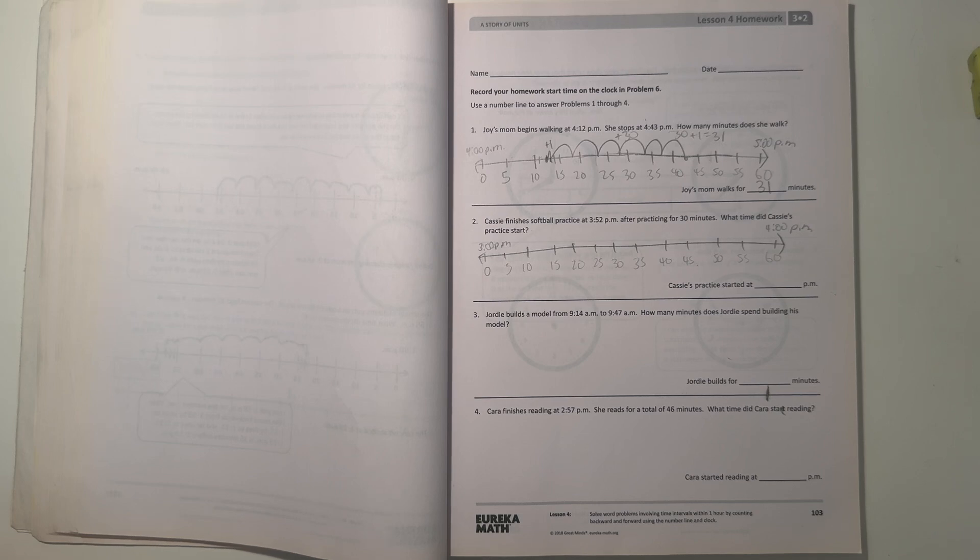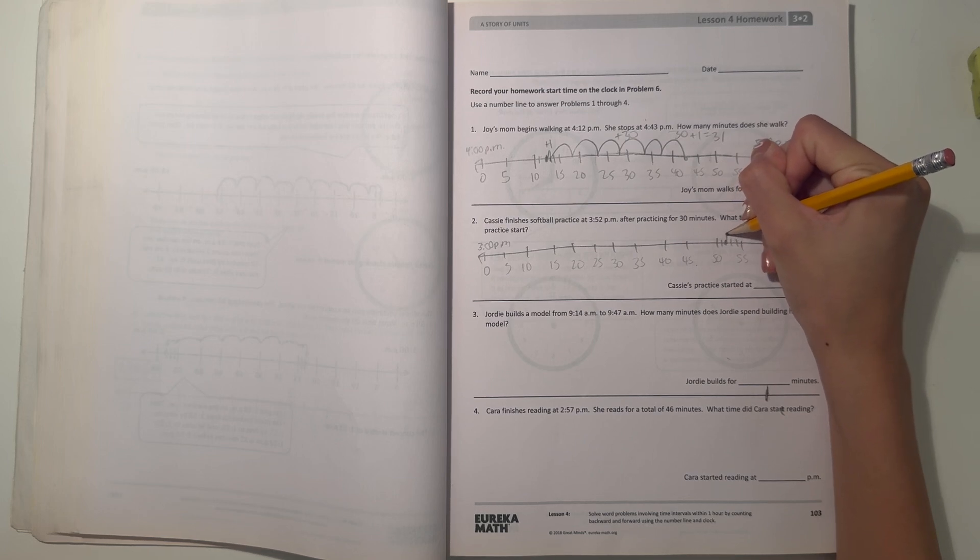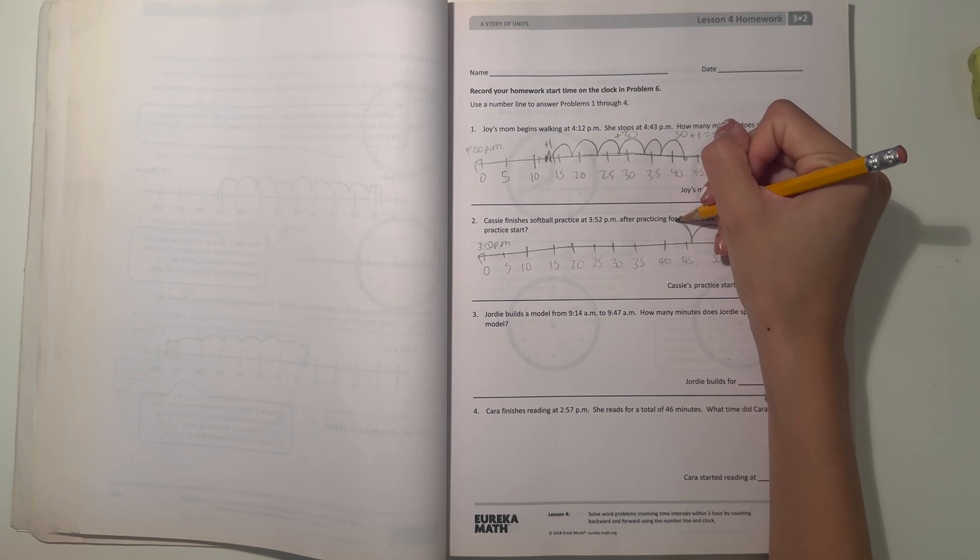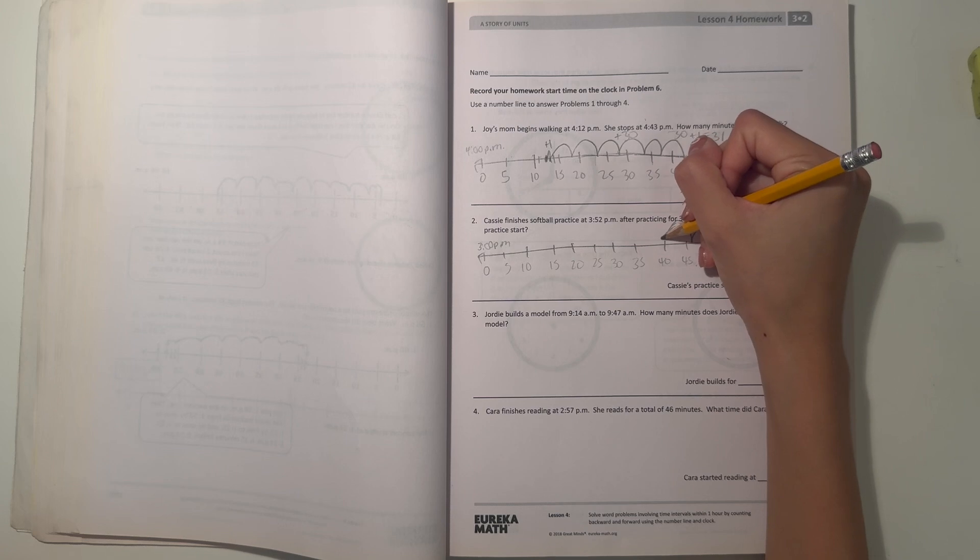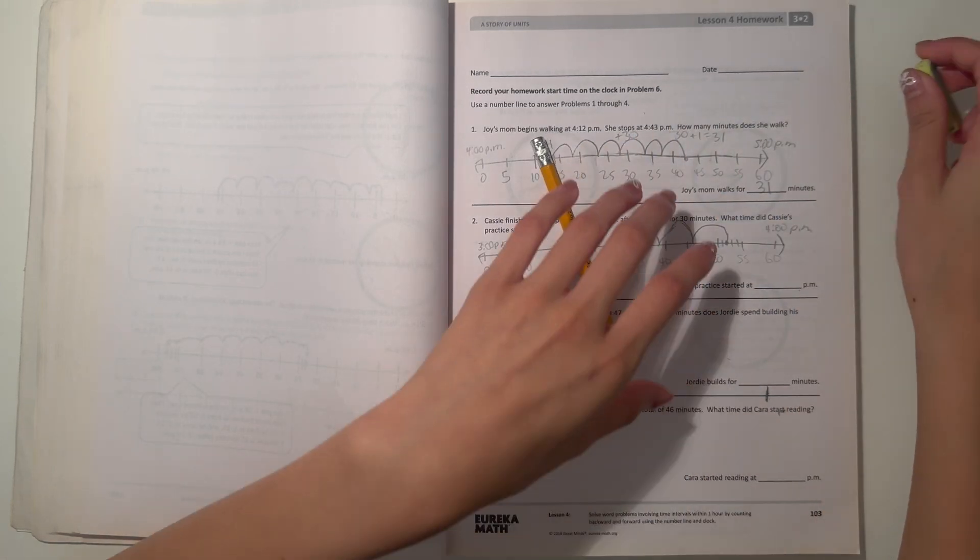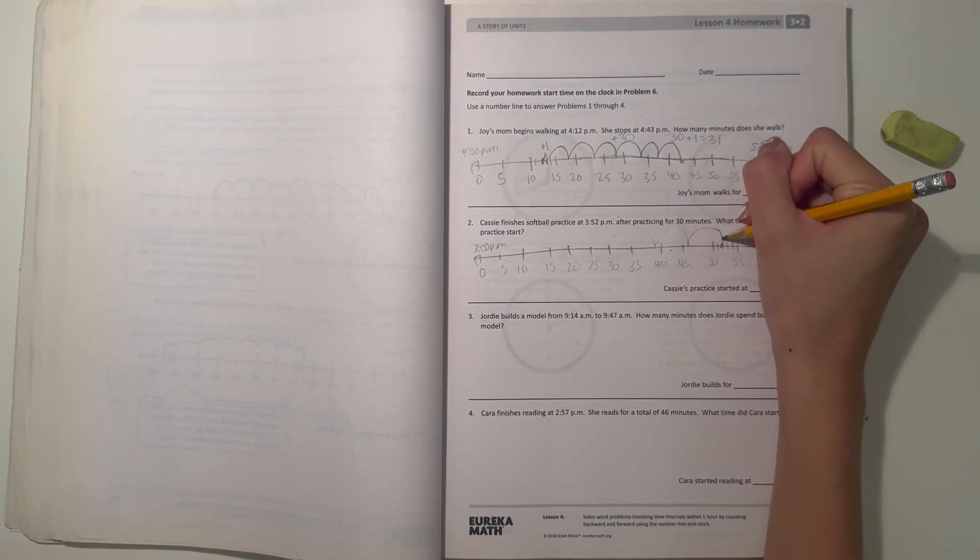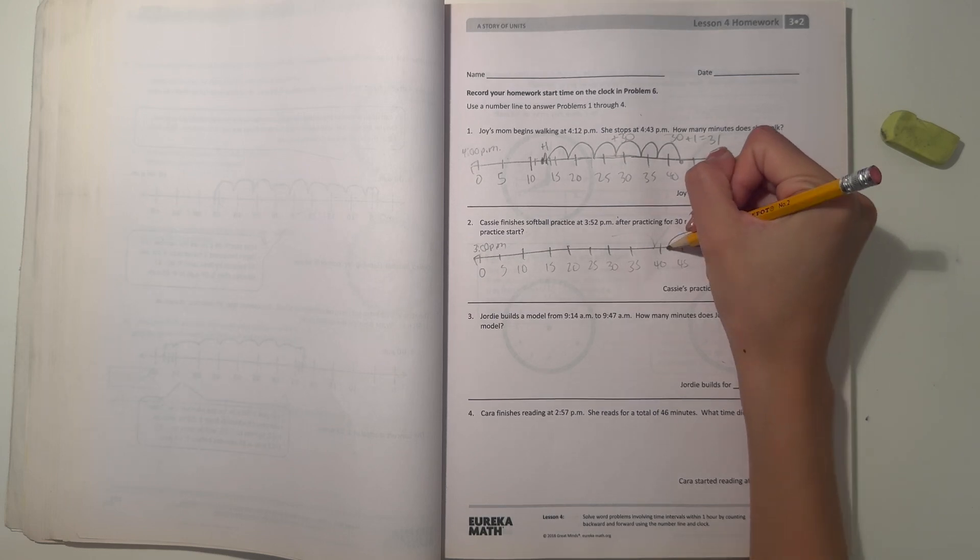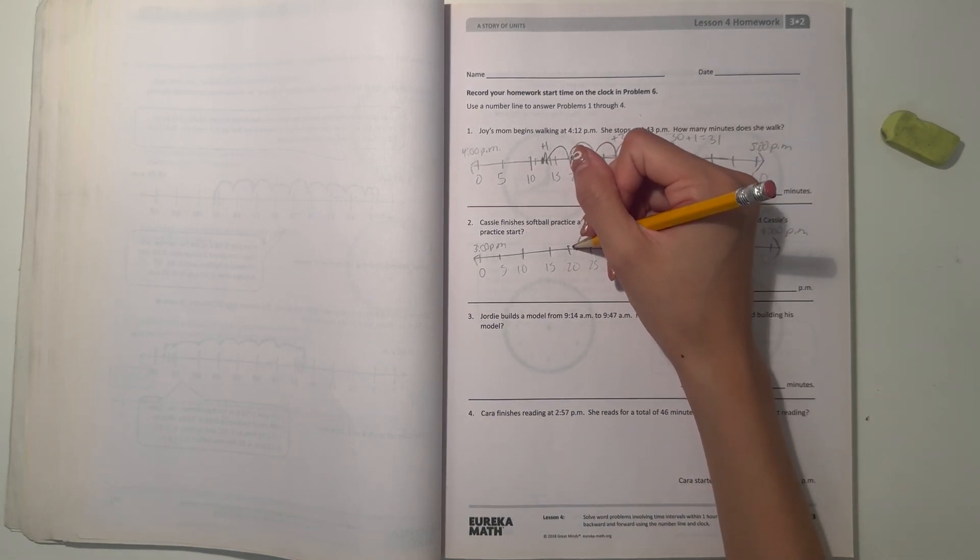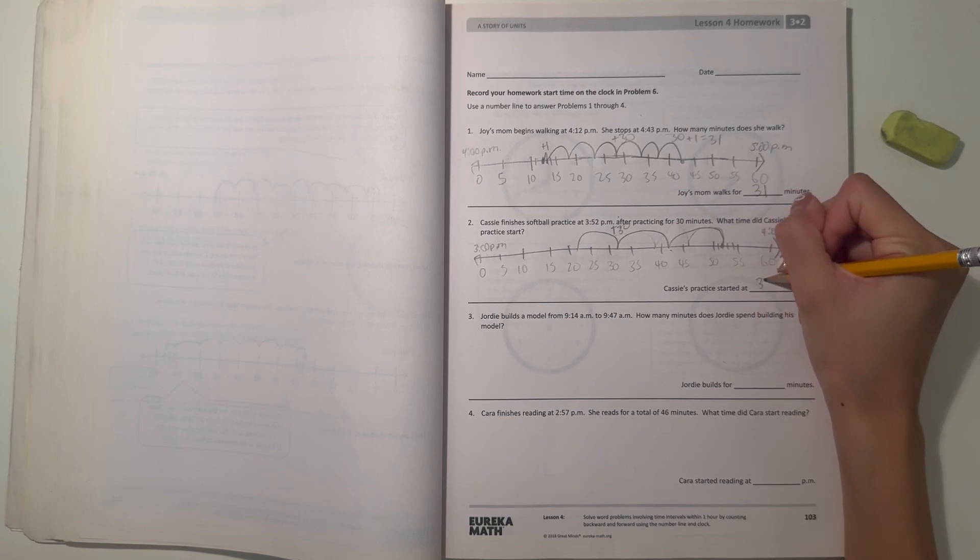She finished at 3:52 after practicing for 30 minutes, so what time does she start? This time we're working backwards. So 52, and she practiced for 30 minutes. Let's jump by 10, so 10, 20, 30 plus 30. So here we have 3:52 and we went back 30, that gives 3:22, which means Cassie's practice starts at 3:22 PM.